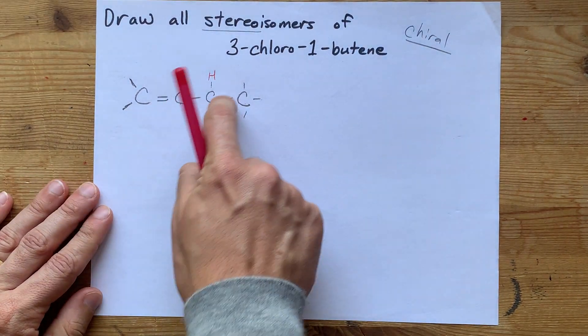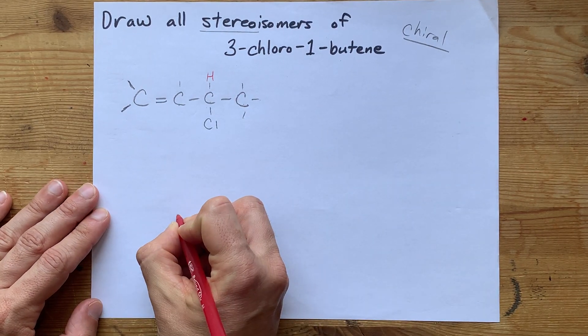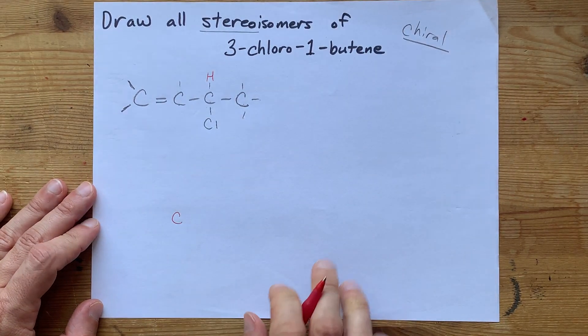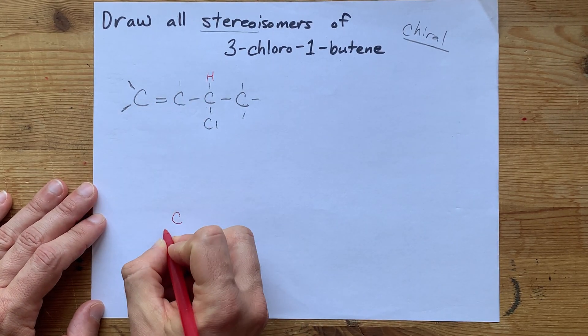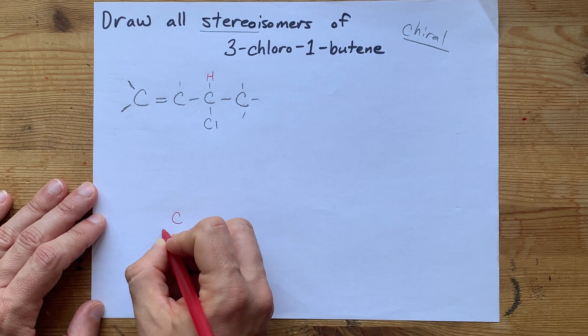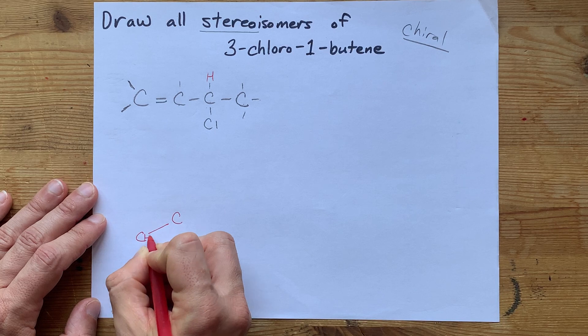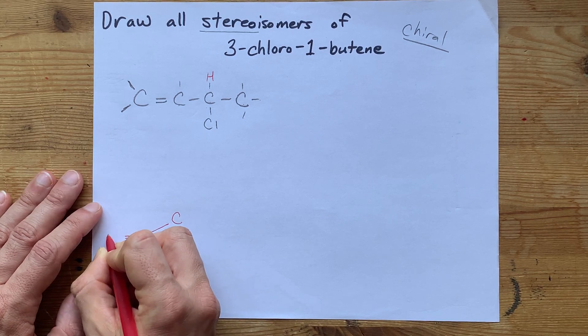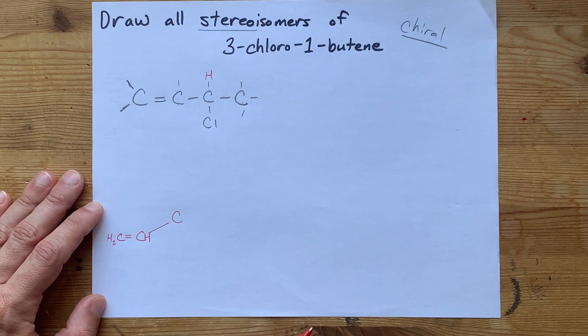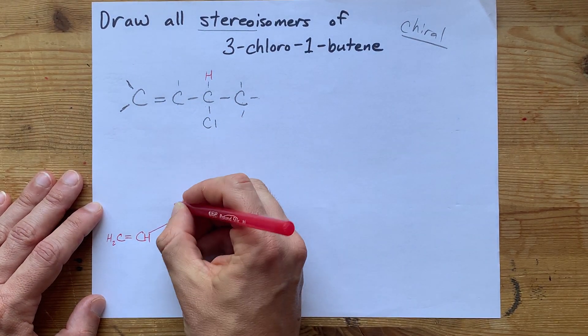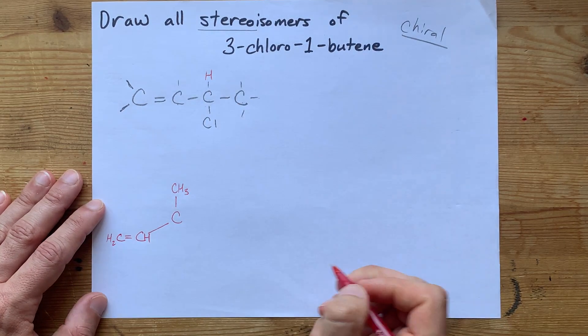It's tetrahedral because there's four different things attached to it. So I'm going to draw that C right here in the center. I really don't want to have to draw this some weird way. So I'm going to do that straight like this: C, H, double bonded to a CH2. That's that chain. Now, I also have a CH3 group, and then I have an H and a Cl.